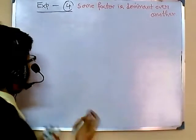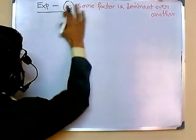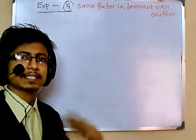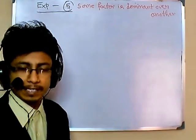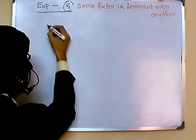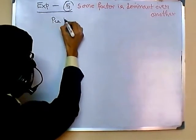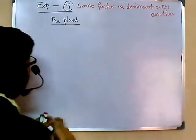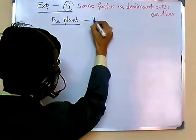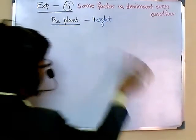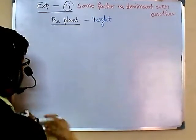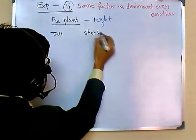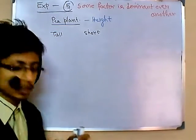Now in experiment number five, again conducted by Gregor Mendel, he did the same type of experiment using pea plants. He took a trait for the pea plant — the height. He took height as tall and short — those are the two things: a tall plant and a short plant.